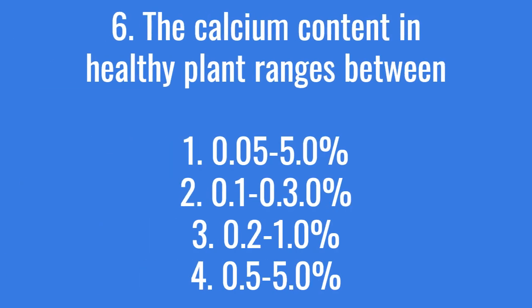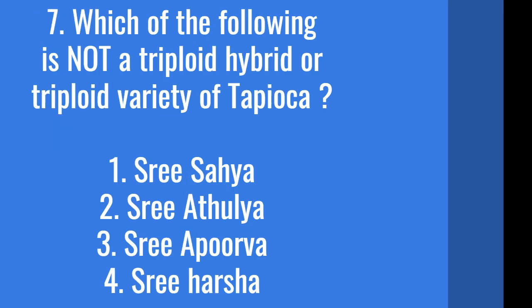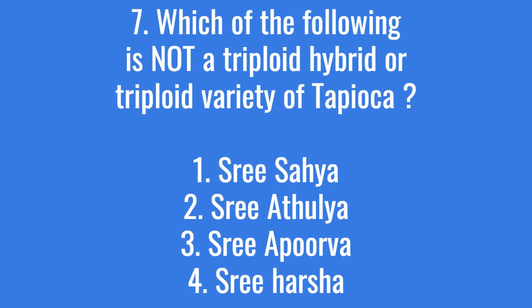The calcium content in a healthy plant ranges between? The right answer is option 3: 0.2 to 1.0%. Which of the following is not a triploid hybrid or triploid variety of tapioca? The correct answer is option 1: Shri Sahya.